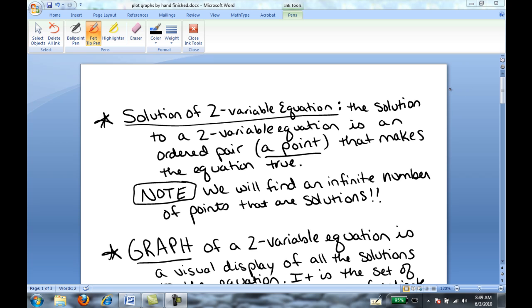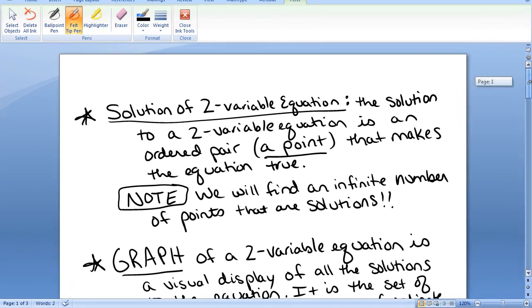First of all, the solution of a two-variable equation is an ordered pair. It's a point that makes the equation true. Now, when we're finding solutions to a two-variable equation, it differs from finding the solution to a one-variable equation. When we found the solution to a one-variable equation, we found generally that there was only one answer. But when we do two-variable equations, we're going to find that there's an infinite number of points that are solutions to these equations.